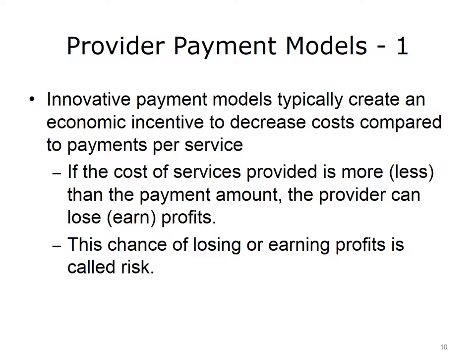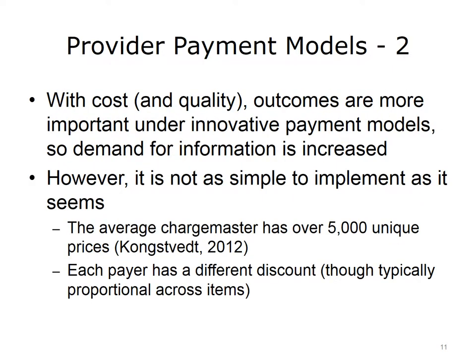This chance for earning or losing profits is called risk. With cost and quality, outcomes are more important under innovative payment models, so demand for information is increased. However, it's not as simple to implement as it seems. The average charge master, or list of prices charged at a hospital, has over 5,000 unique prices. Each payer, such as an insurer or government plan, has a different discount, though it is typically proportional across items.